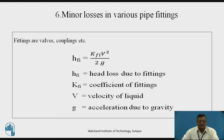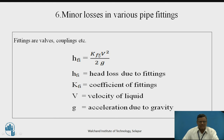Minor loss in various pipe fittings. Different types of pipe fittings are generally used, such as flow control valves, shut-off valves, and different types of couplings to join two pipes. The head loss in pipe fittings, HFI, is given by the formula: KFI × V²/2g, where KFI is the coefficient of the fitting.